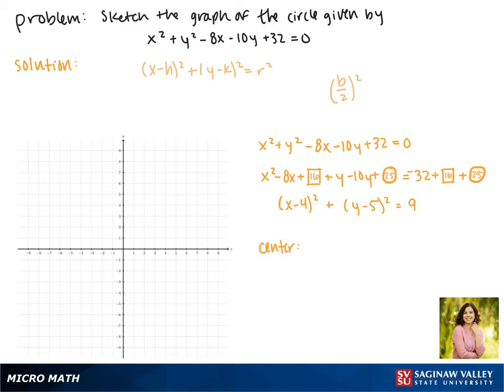So now we can find the center of our circle. This is at the point (4, 5). And now since r squared equals 9, that makes our radius equal to 3. So we'll graph the point (4, 5) and then the points that are 3 units away from it. So this is the graph of our circle.